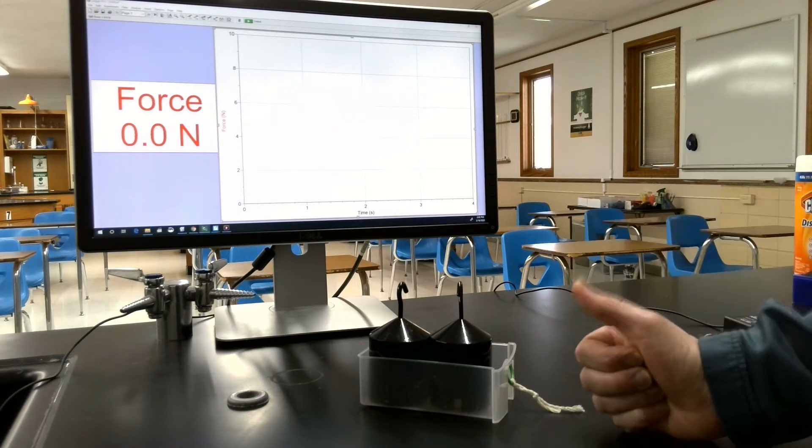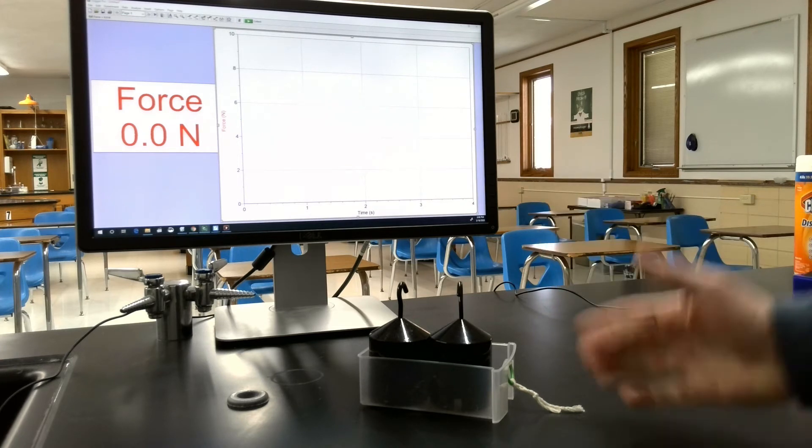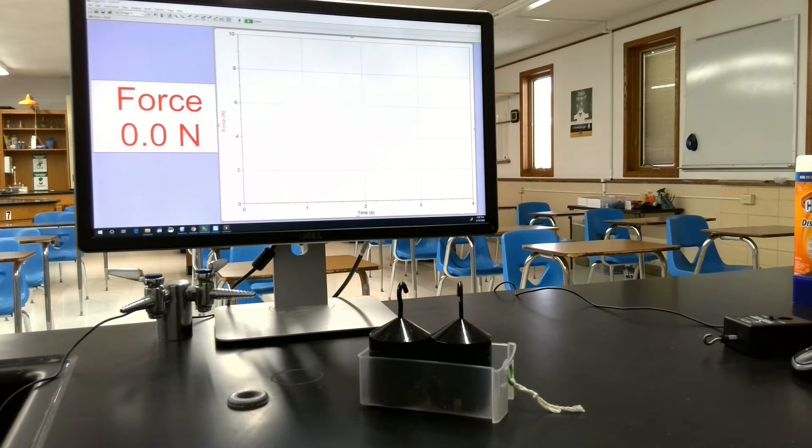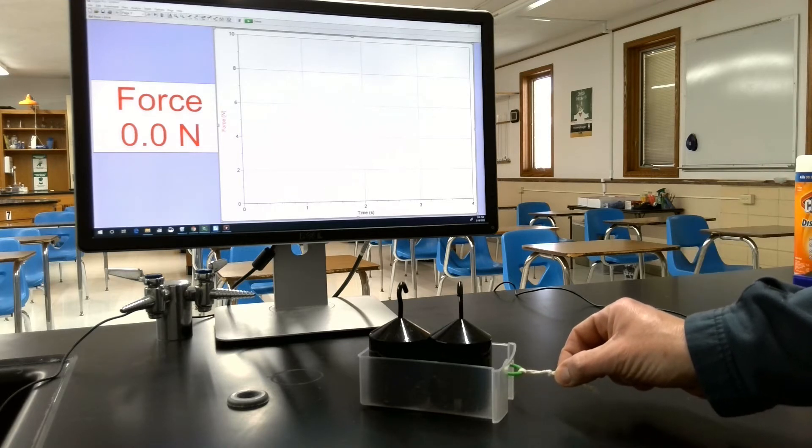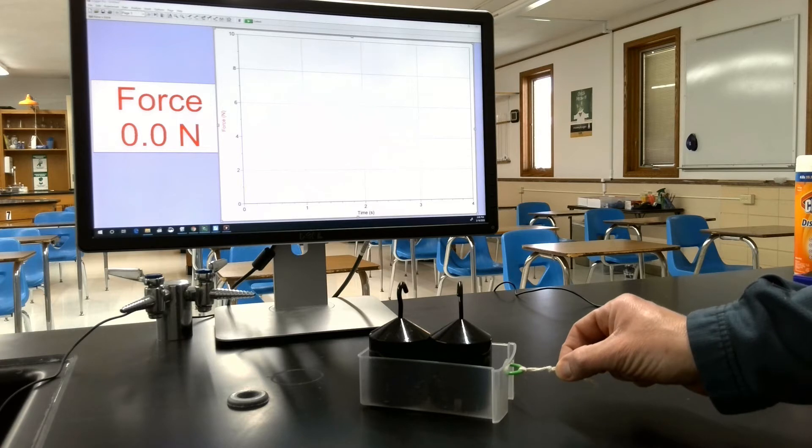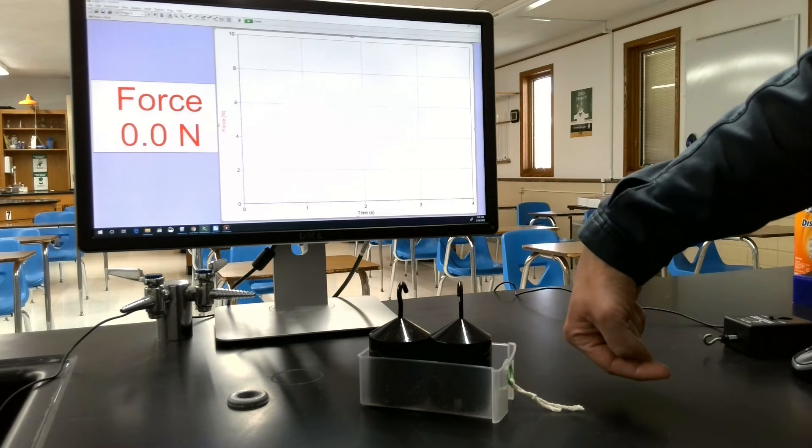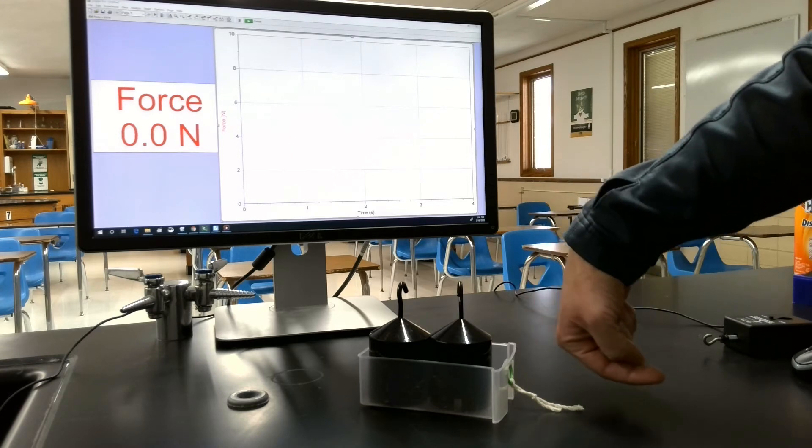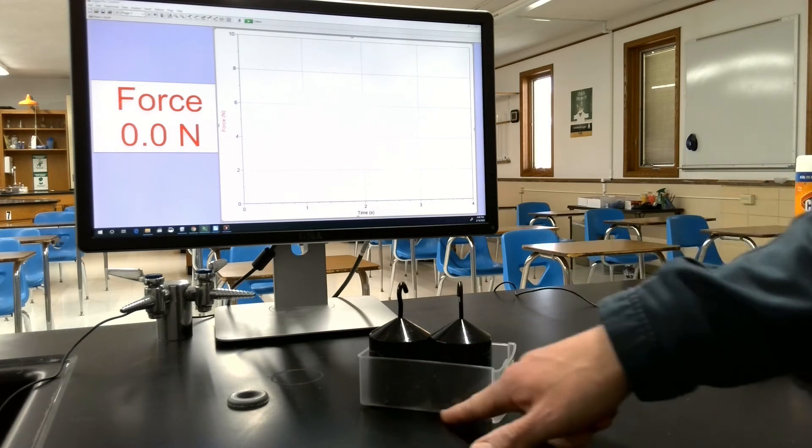Right now there's no friction acting on this object because there's no lateral forces on this thing. However, if I come along and try to move it, I can pull it. I'm actually pulling it right now lightly and it's not moving. If it's not accelerating, it's not even moving, there must be a force resisting it, and it's this interaction between the surface of the table and the bottom of the object that's providing some friction.